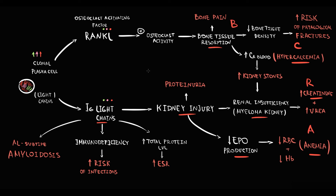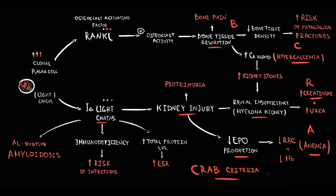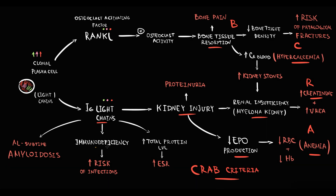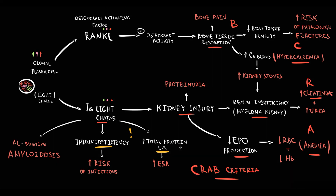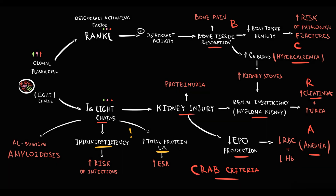In addition to CRAB symptoms, in multiple myeloma, excessive production of monoclonal immunoglobulin leads to immune deficiency and elevation in total protein level. And production of light chains also leads to amyloidosis.